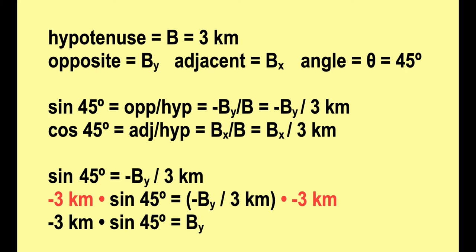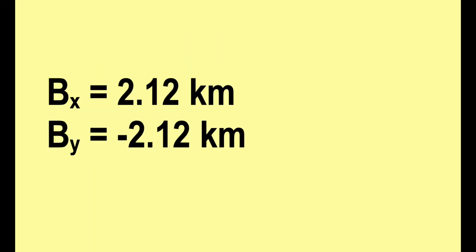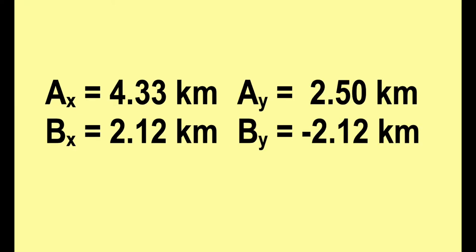Some people deal with this instead by doing the sine of negative 45 degrees, which would also work. I don't usually do it that way, it just comes down to what feels more natural for you. In the end, what matters is that B sub X comes out positive and B sub Y comes out negative. So these are the components of the second vector. And we have finally finished step one of solving this problem.